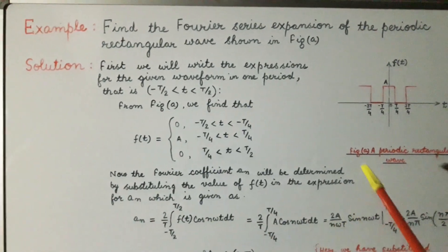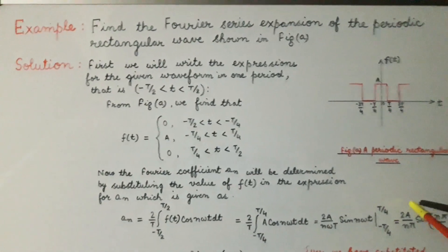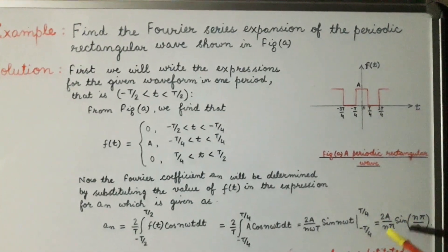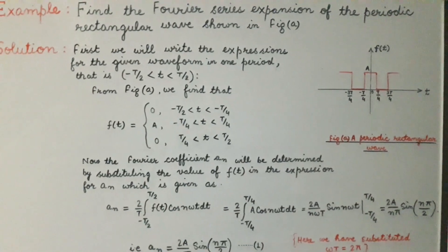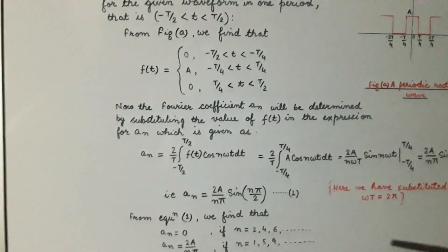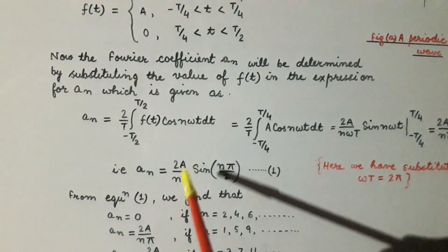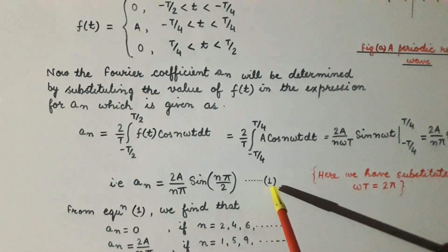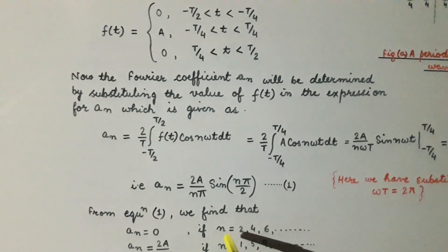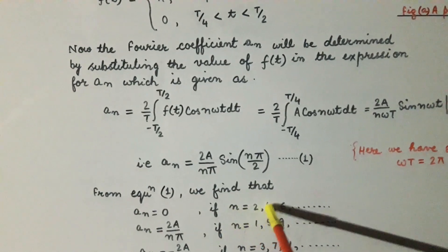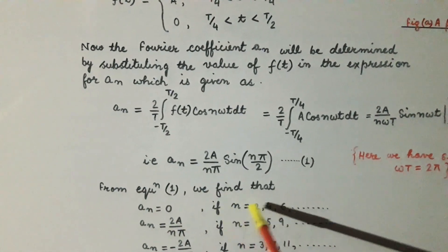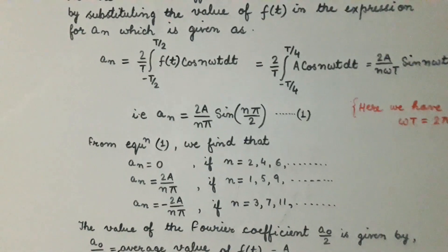Substituting f(t) = A in the integral, we arrive at the value of aₙ = (2A/nπ)·sin(nπ/2), where we have used ω = 2π/T. From this equation, if we substitute n = 2, 4, 6, … (even values), we find that aₙ = 0. That is, aₙ is zero for all even values of n.